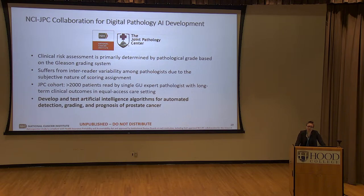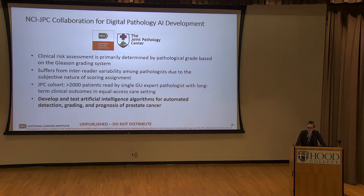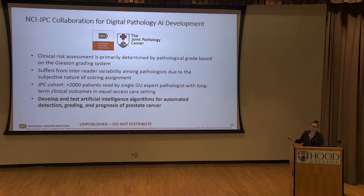We are working with the Joint Pathology Center, associated with Walter Reed and the DOD — these are military members undergoing treatment. It's an equal access care setting, so outcomes have less heterogeneity in how patients are followed. There are over 2,000 patients, and we just hit 10,000 slides in about 500 patients. Our first question was: how do we annotate this data to develop algorithms that pathologists will want to use?